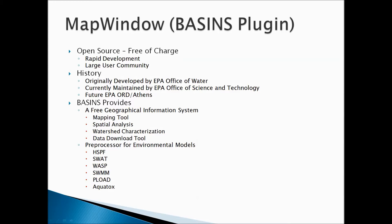BASINS provides a free geographical information system. MapWindow's BASINS gives us about 90 percent of the capabilities that ESRI's ArcGIS or ArcMap has — it's a mapping tool and spatial analysis tool capable of watershed characterizations and downloading data from the web. It also has functionality for pre-processing environmental models such as HSPF, SWAT, WASP, SWIM, PLOAD, and AQUATOX.